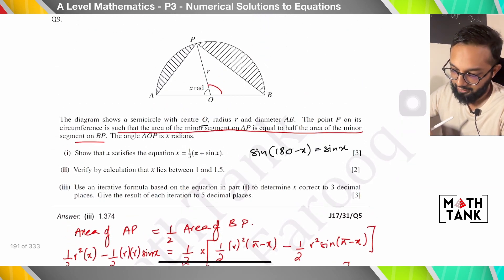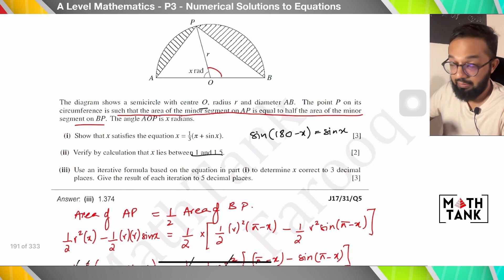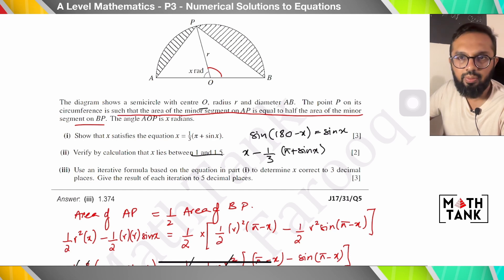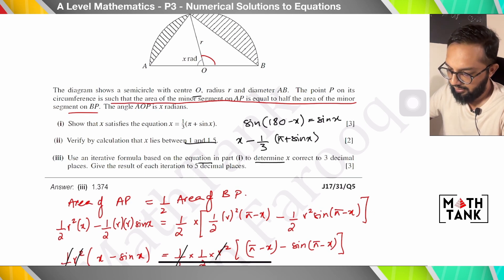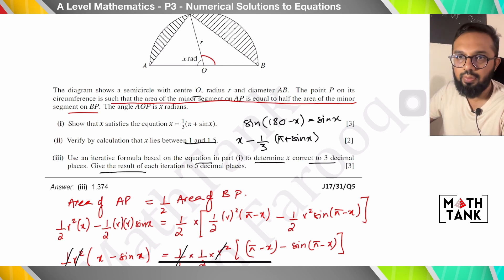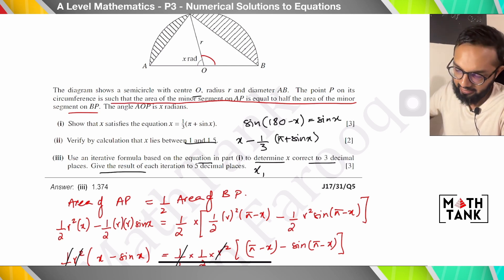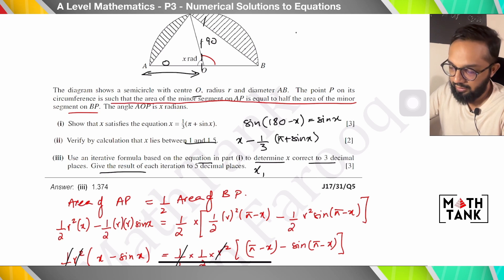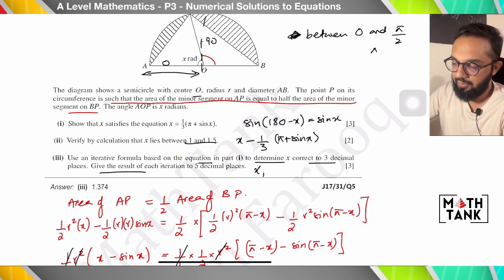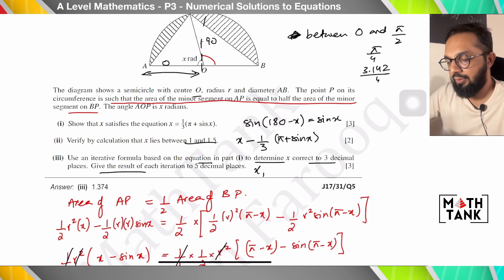Verify by calculation that x lies between 1 and 1.5: bring everything to one side and check for change of sign at f(1) and f(1.5). Then use the iterative formula x_{n+1} = ⅓(π + sin xₙ) to determine x correct to three decimal places, giving each iteration to five decimal places. Since no starting value is specified but the root is between 0 and π/2, take x₁ = π/4 ≈ 0.7855.